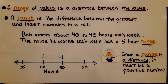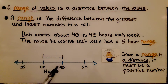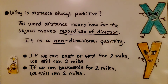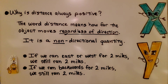A range of values is a distance between the values — the difference between the greatest and least numbers in a set. Bob works about 40 to 45 hours each week, so the hours he works has a 5-hour range. Since a range is a distance, it must be a positive number. Distance means how far an object moves regardless of direction — it's a non-directional quantity. If we ran east or west for 2 miles, or even ran backwards for 2 miles, we still ran 2 miles regardless of direction.